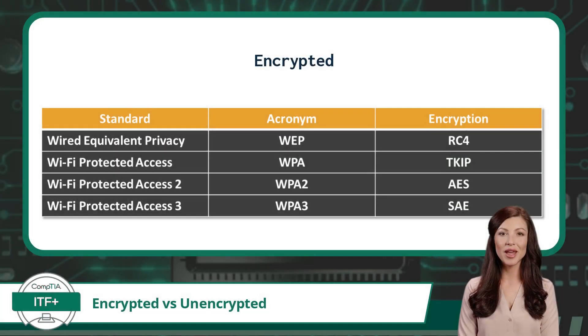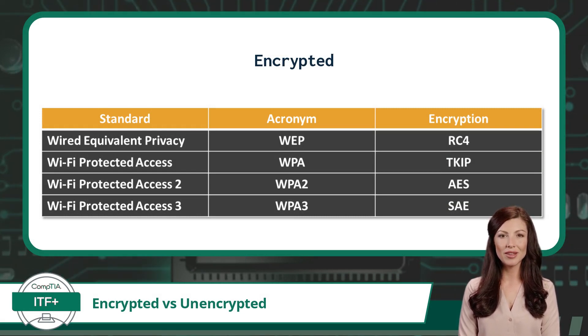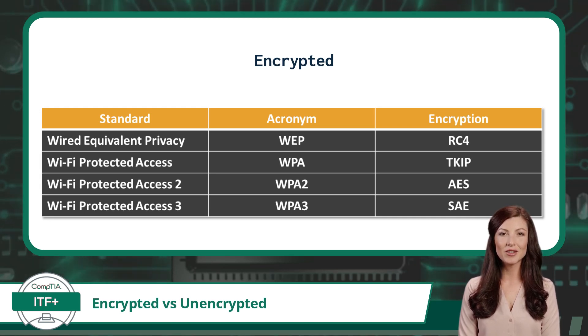Now that we have covered the unencrypted option, let's switch over to encrypted networks. We will be covering four key encryption standards: WEP, WPA, WPA2, and WPA3.